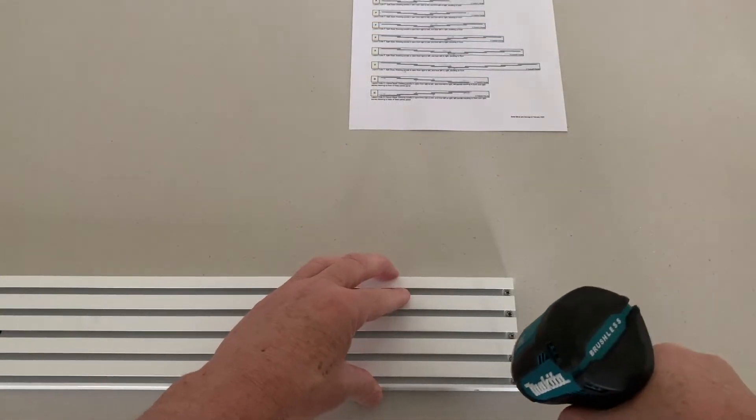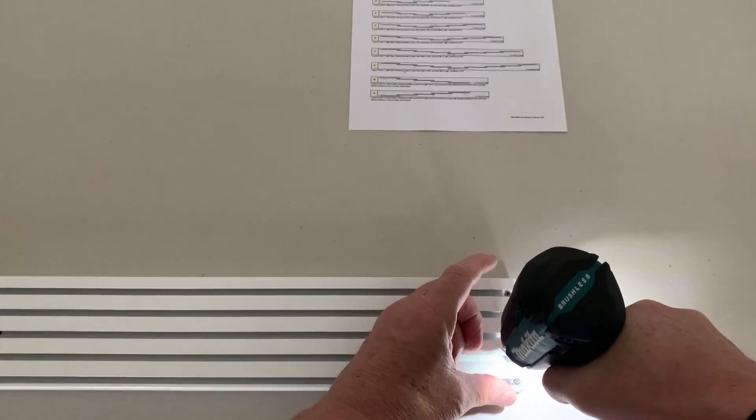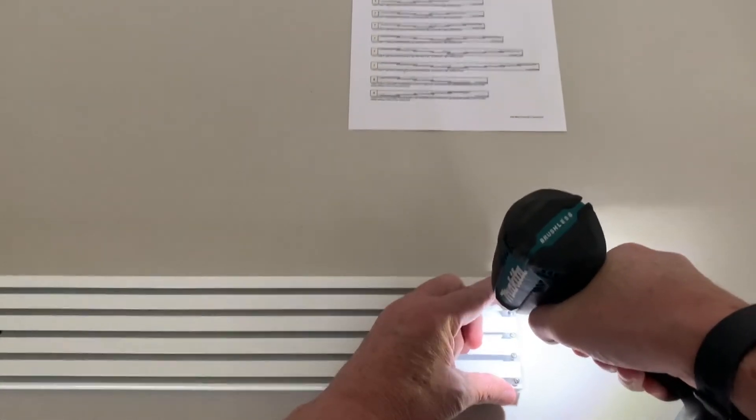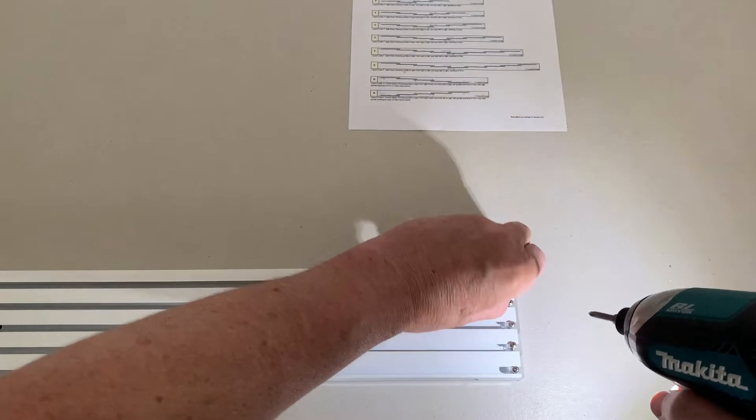To take off the end cap you take out the screws. Five track has five screws, four track has four, three has three obviously. So take all those out.